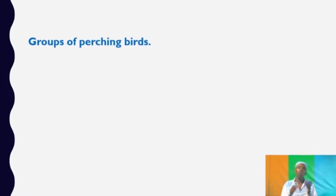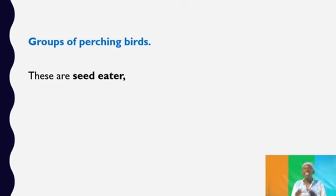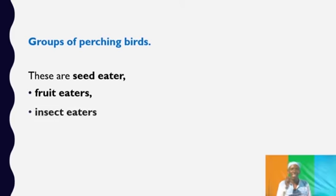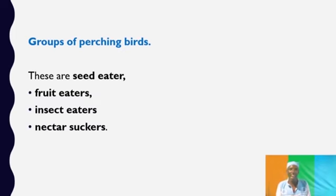Perching birds are also subdivided into the following groups. We have the seed eaters, the fruit eaters, the insect eaters which are also known as the insectivores, and the nectar suckers.